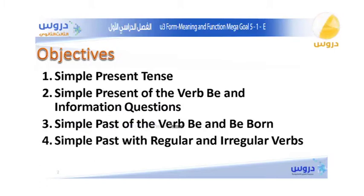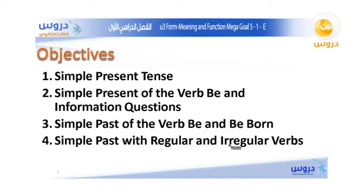Objective three is the simple past of the verb be and 'be born.' And number four is simple past with regular and irregular verbs. So let's begin.